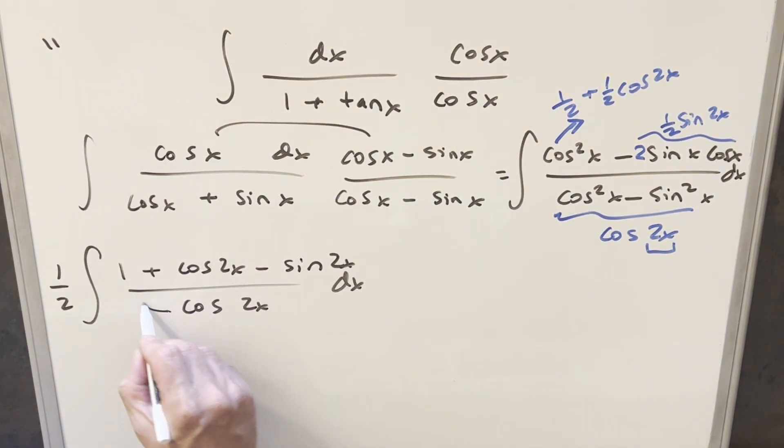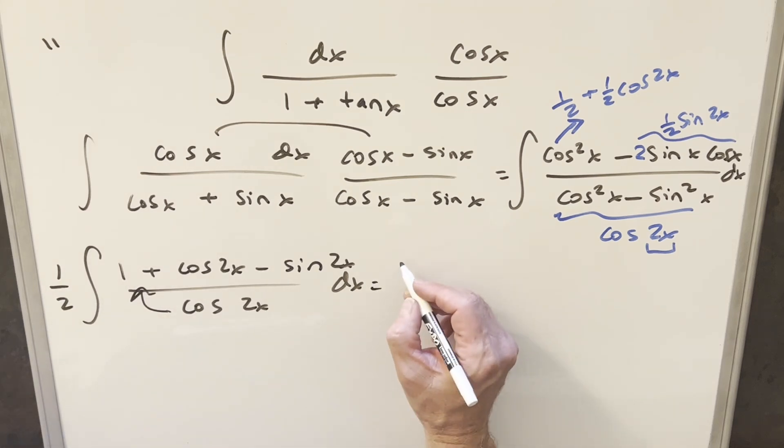But now let's just divide the cosine 2x into everything. We could split it into three separate integrals, but I think I'm just going to do it all as one, because it doesn't really matter.